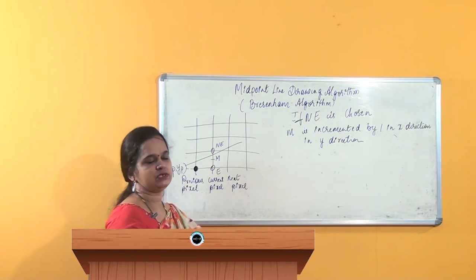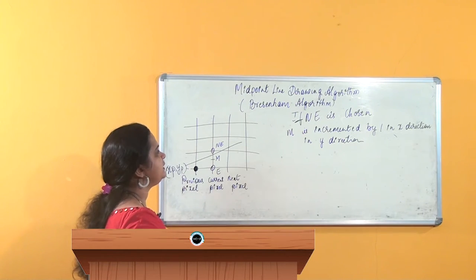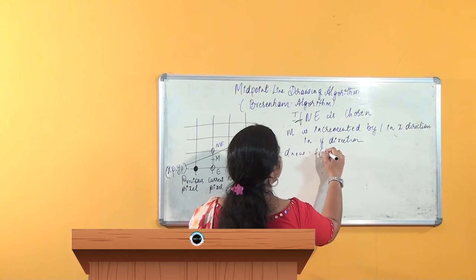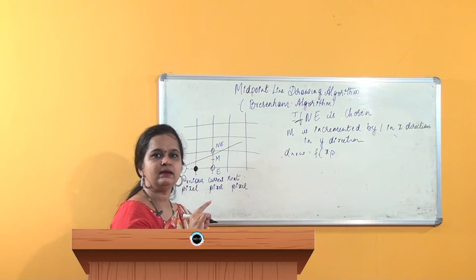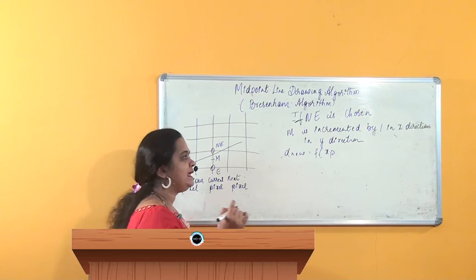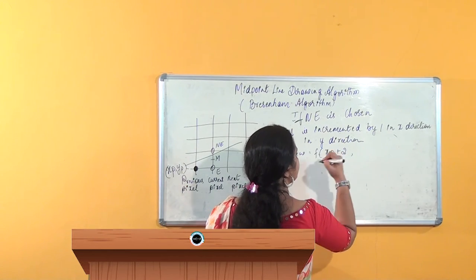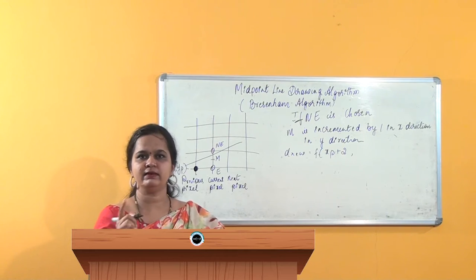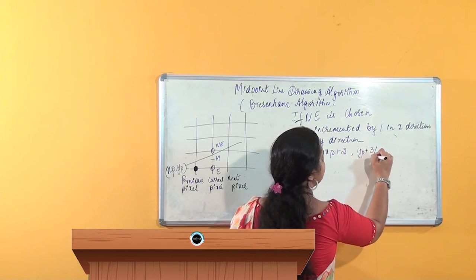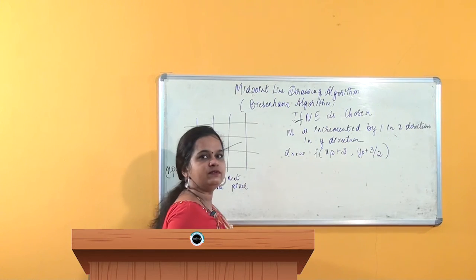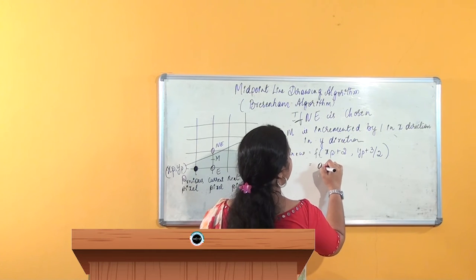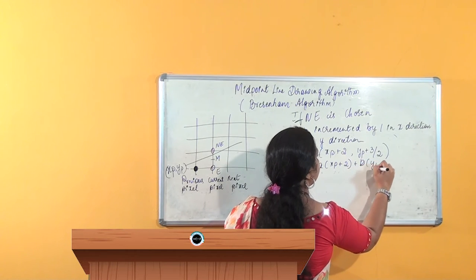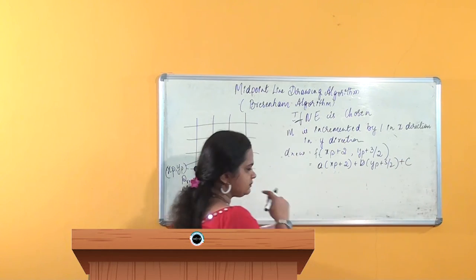Since we move in both x and y direction, the new decision variable d_new is equal to f of (x_p + 2, y_p + 3/2). This is because x_p + 1 was our previous pixel, so adding one gives x_p + 2, and y_p + 1/2 was our previous midpoint, so adding one gives y_p + 3/2. Therefore d_new = a(x_p + 2) + b(y_p + 3/2) + c.